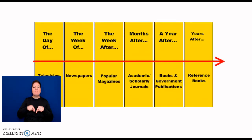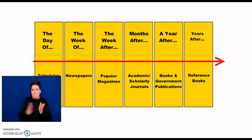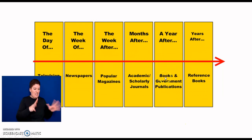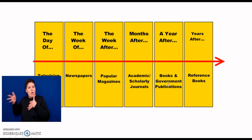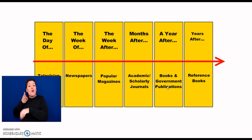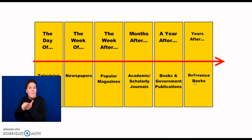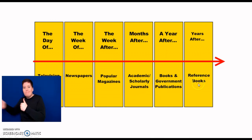Let's get back to the information cycle. A year after an event happens, we start to read about it in books and government publications. Years after an event, we start to see the information in reference books.